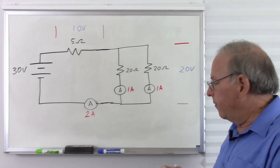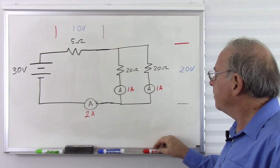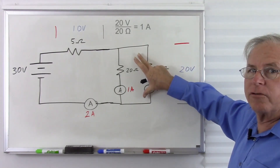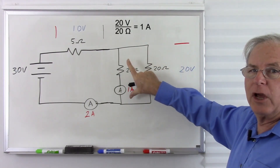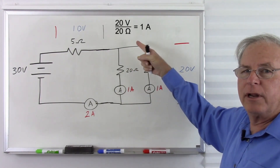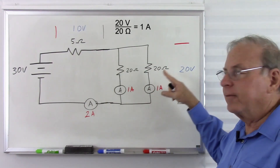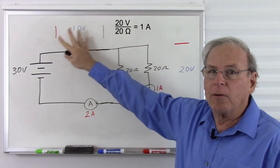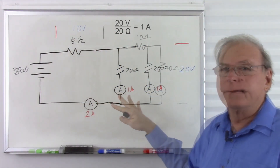Let's confirm with Ohm's Law: 20 volts across 20 ohms — 20 divided by 20 gives us 1 amp. Same thing on the other side. It all balances out.